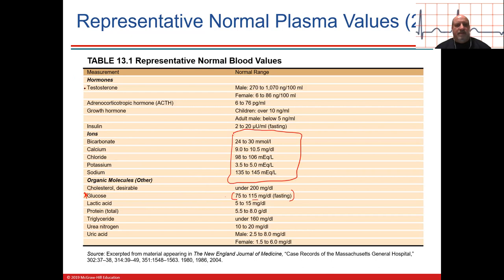Look at hormone levels like testosterone. Adrenocorticotropic hormone is an anterior pituitary hormone that targets the adrenal gland to produce cortisol or aldosterone, which raises blood pressure. Cortisol is an anti-inflammatory stress hormone. Insulin is important. We talked about bicarbonate as a buffer. Calcium, sodium, potassium, chloride — your electrolytes — levels are really important.